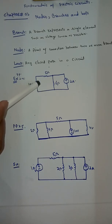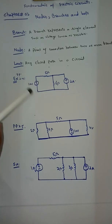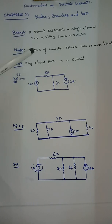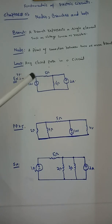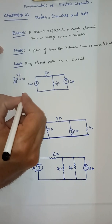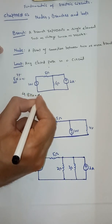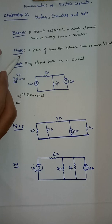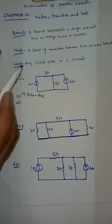Let's look at Example 2.4: determine the number of branches, nodes, and loops in the figure. So how many nodes, branches, and loops are there in this particular circuit? As we know, a branch is any single element. So how many single elements do we have? One, two, three, four — we have four branches.